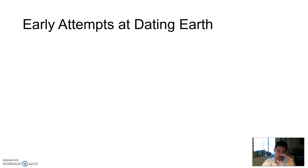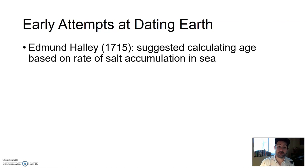Let's look at the historic attempts at dating Earth, absolute dating Earth. Starting back in 1715, Sir Edmund Haley, famous for Haley's comet. 300 years ago, suggested calculating the age of the Earth based on the rate of accumulation of salt in the sea.